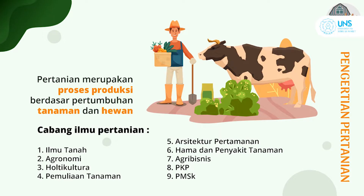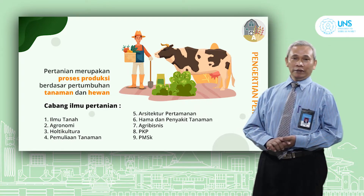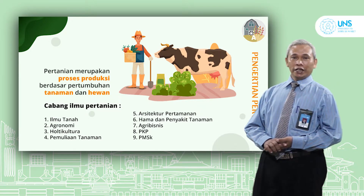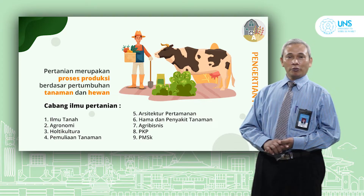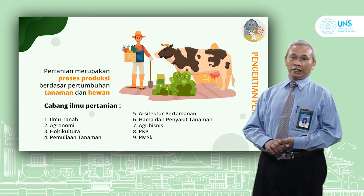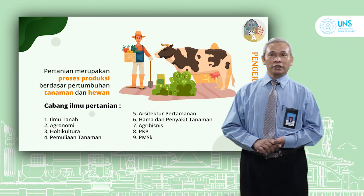Untuk pengertian pertanian itu sendiri, bahwa pertanian merupakan proses produksi berdasar pertumbuhan tanaman dan hewan. Jadi ini adalah pertanian dalam arti luas sehingga tidak hanya meliputi tanaman tetapi juga menyangkut hewan. Cabang-cabang ilmu pertanian ada sembilan cabang yaitu ilmu tanah, agronomi, hortikultura, pemulihaan tanaman, arsitektur pertamanan, hama dan penyakit tanaman, agribisnis, penyuluhan dan komunikasi pertanian serta gizi masyarakat dan sumber daya keluarga. Beberapa cabang ilmu ini di fakultas pertanian kita sudah merupakan program studi.